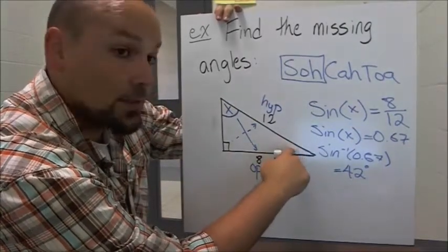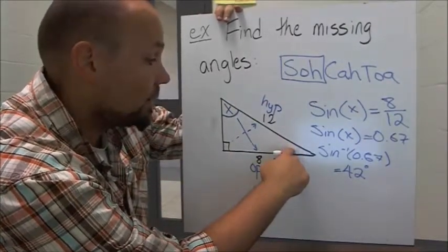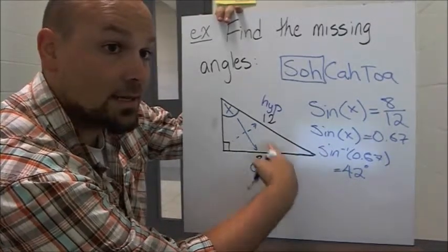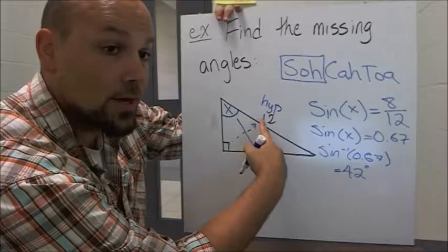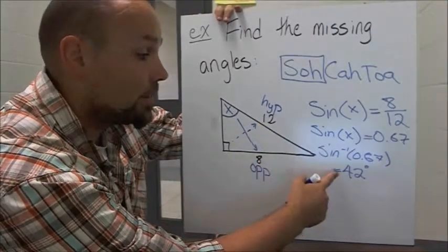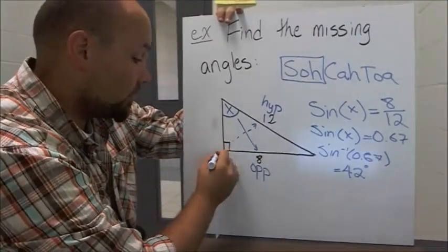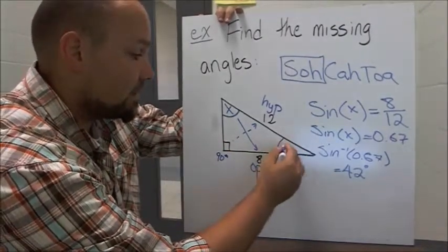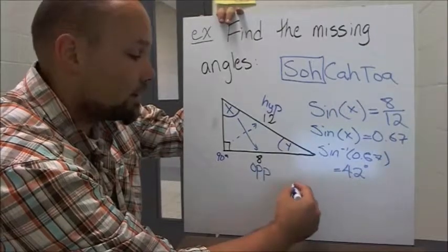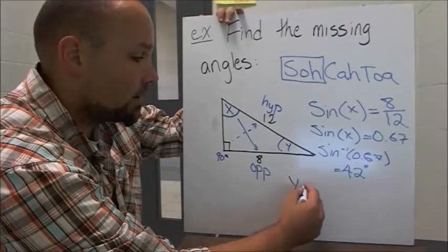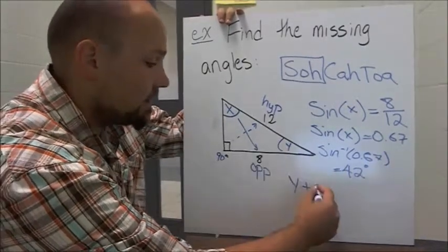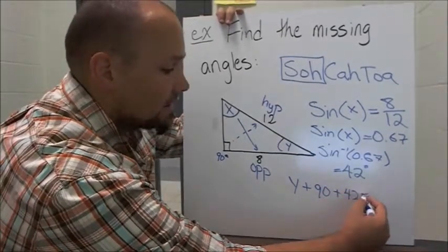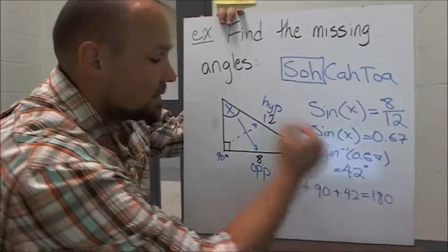Now to find this last one, we could think of this as the angle we don't know, then this would be the adjacent side, and this would be the hypotenuse. But with the fact that we already know that this is 90, we can just say that this last angle here, let's call it y, we can say that y plus 90 plus 42 has to equal 180, because that's a full triangle.